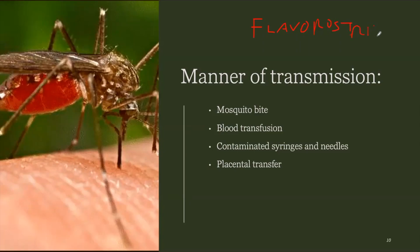The manner of transmission: number one, of course, is the mosquito bite. In less developed countries that do not have good blood transfusion protocols, you can get malaria from blood transfusion — it is still standard routine to screen for malaria during blood transfusions. Malaria can also be transferred through the placenta, so there's vertical transmission, as well as through contaminated syringes and needles. The most common, of course, is the mosquito bite.